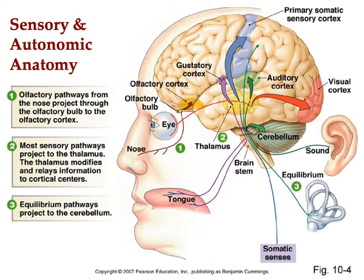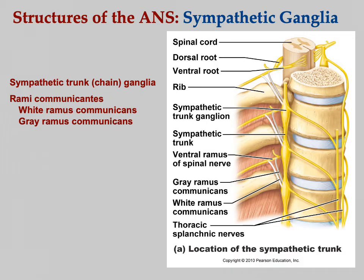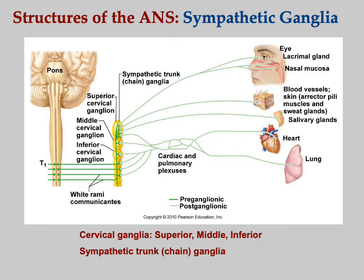Let's start talking about some sensory and autonomic anatomy — this is for the labs. The sympathetic trunk or chain ganglia run right alongside the spinal cord. We have the white ramus communicans and the gray ramus communicans. The white ramus is the pre-ganglionic fiber and the gray ramus is the post-ganglionic fiber.